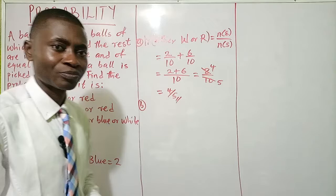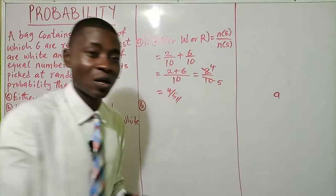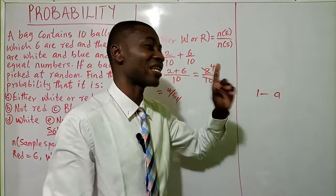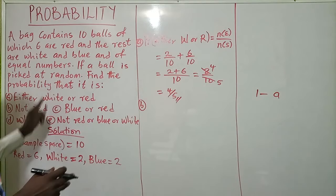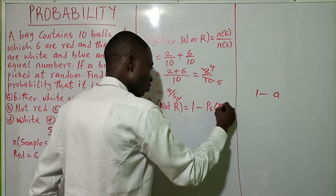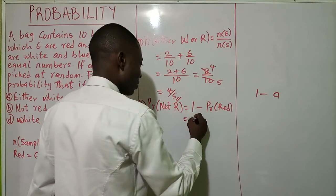Now let's take the second one: probability of not red. In probability, if the probability of something occurring is A, then the probability that that same thing will not occur is one minus A. Please don't forget that. So the probability of not red equals one minus the probability of red.